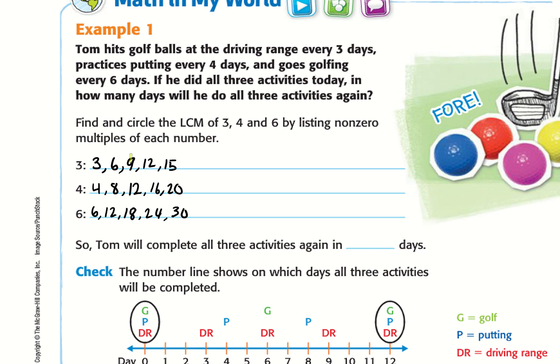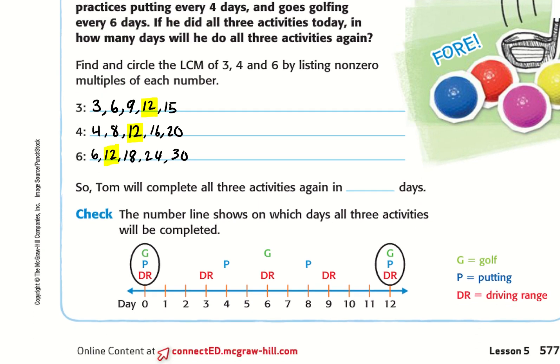So if I look at my common multiples between all three numbers, I see that I have twelve as my common multiples. So Tom will complete all three activities again in twelve days.